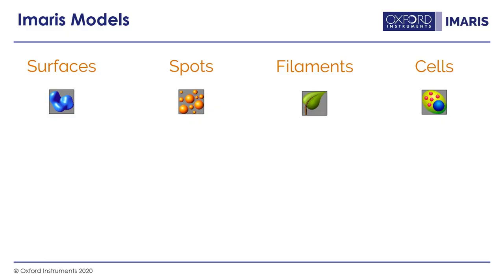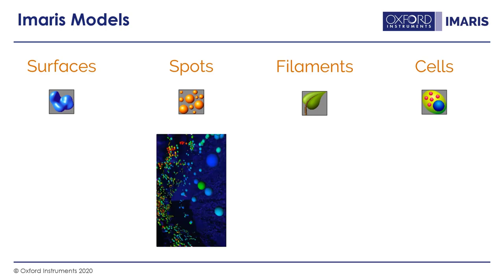In earlier parts of this webinar series, we already introduced the segmentation models that Imaris provides for image analysis: the surfaces, spots, filaments and cells. The spots are developed for identifying the position of small puncture-like structures in your datasets, for example vesicles or nuclei. They are not identifying the shape of the signal, but only the position, intensity and size. They are a great tool for counting objects and analyzing their distribution.